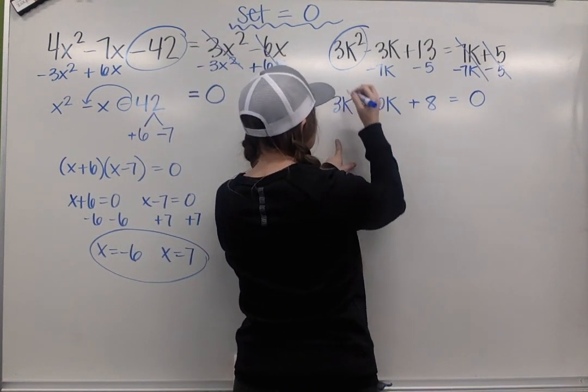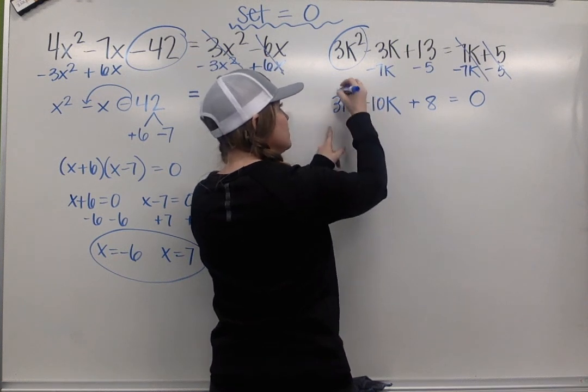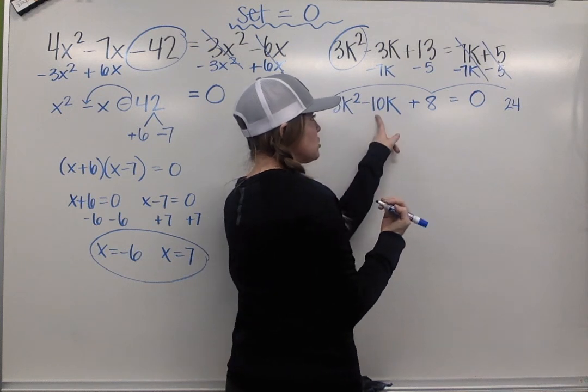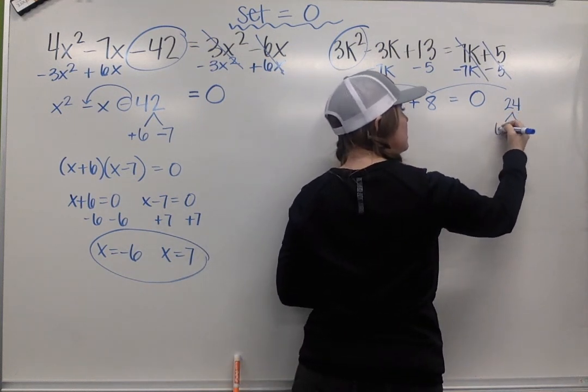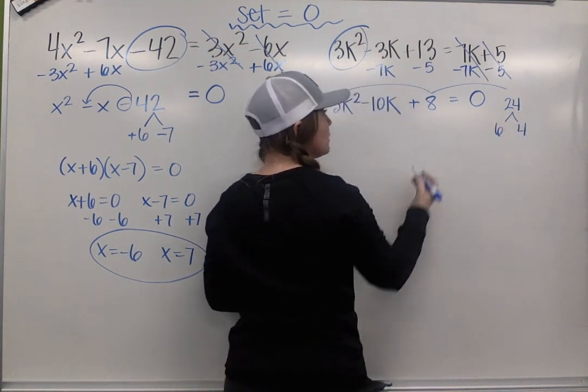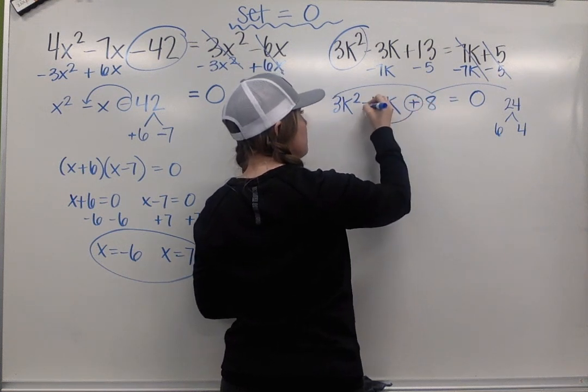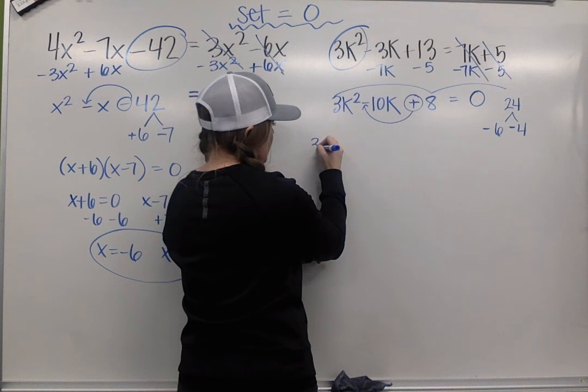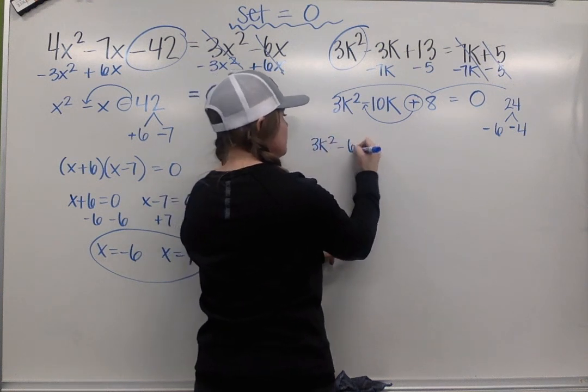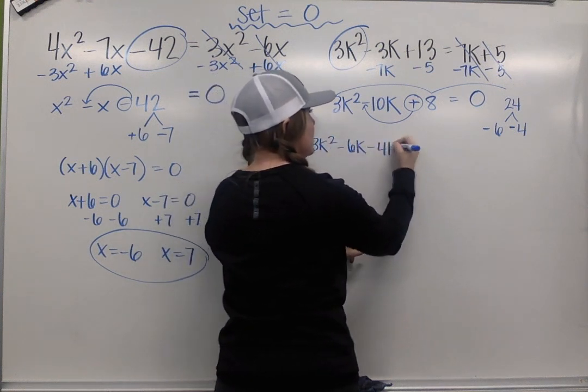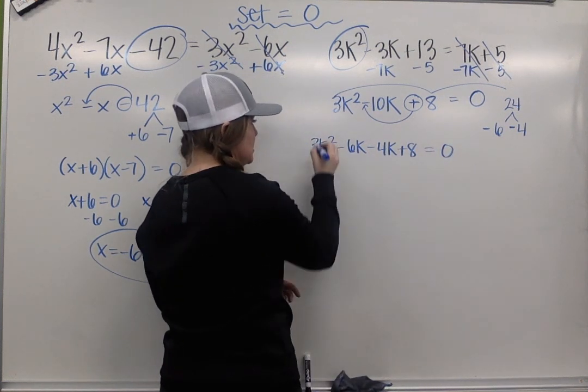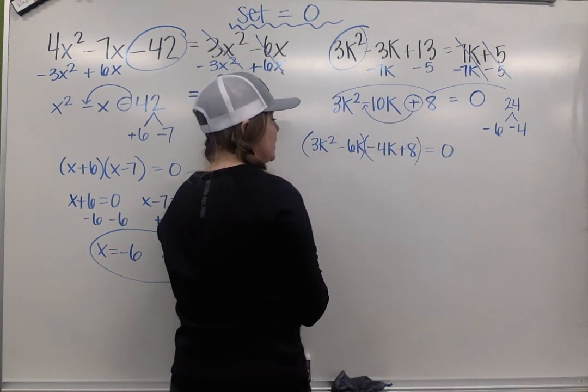I'm going to factor here. My leading coefficient is 3, so I have to take 3 times 8, and I get 24. The factors of 24 that will combine to be 10 are 6 and 4. Signs are the same, both negative. So that gives me 3k² - 6k - 4k + 8 = 0. I'm ready to factor by grouping.